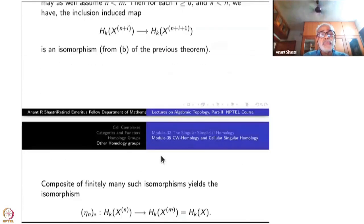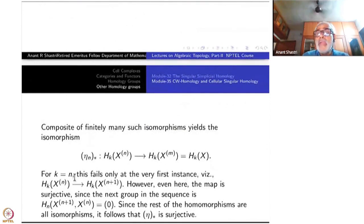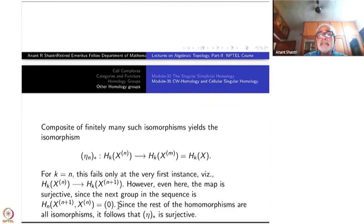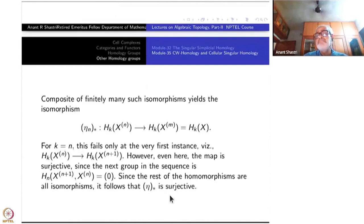Taking the composition from XN to XN+1 to XN+2 and so on up to XM: since K is less than N, K is also less than N+1, N+2, etc., so all inclusion maps are isomorphisms. A finite composition of isomorphisms is an isomorphism. For K equal to N, the very first map is not an isomorphism but only surjective; after that all others are isomorphisms. Therefore the composite is also surjective, because HN of XN+1 XN is 0 in the long homology exact sequence. That takes care of the finite dimensional case.